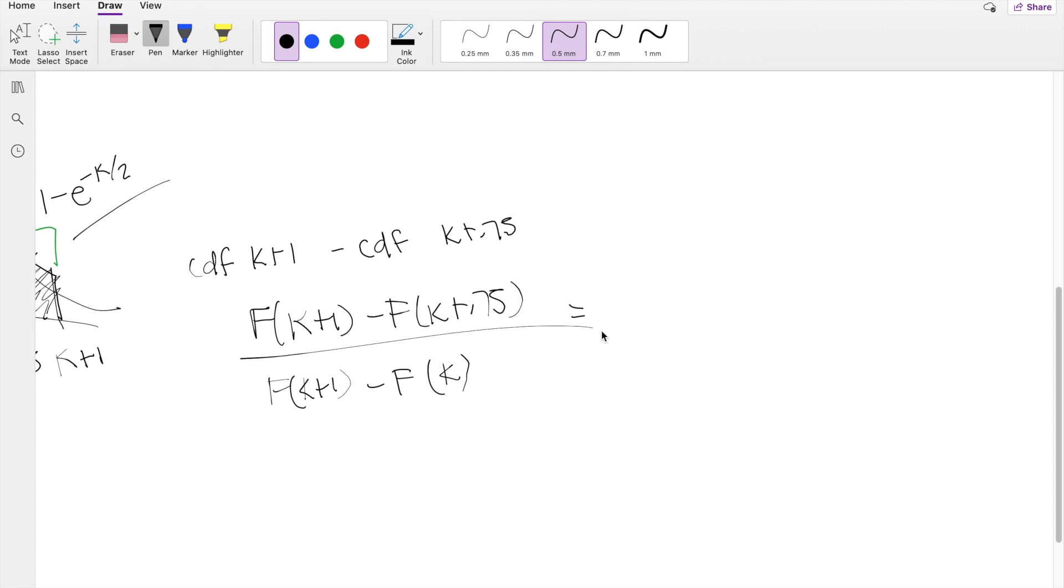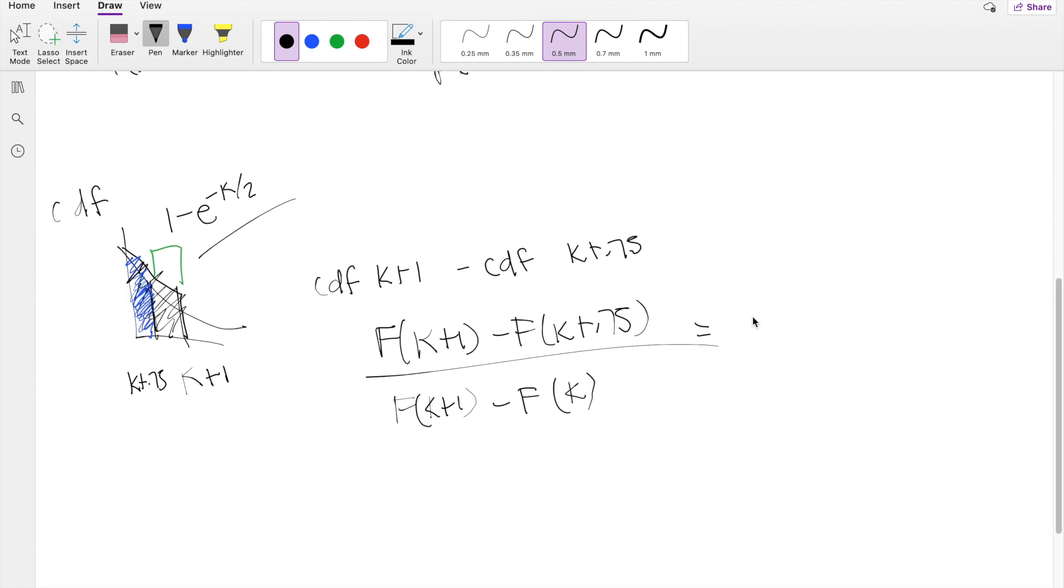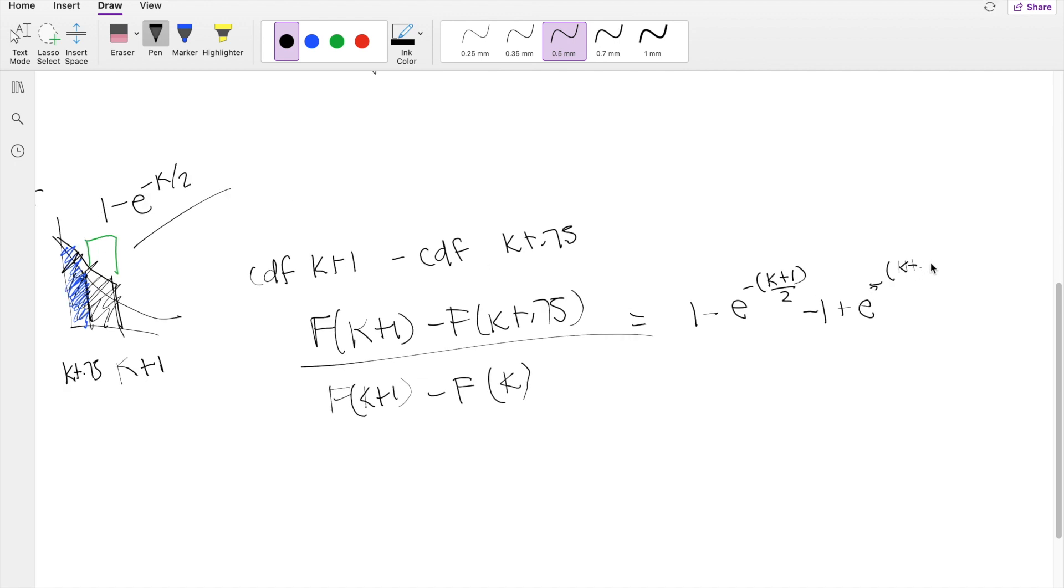Okay, so plugging it into our CDF, we're going to get 1 minus e to the negative k plus 1 over 2, minus 1 plus e to the negative k plus 0.75 over 2, divided by the 1 minus e to the negative k plus 1 over 2, minus 1 plus e to the negative k over 2.